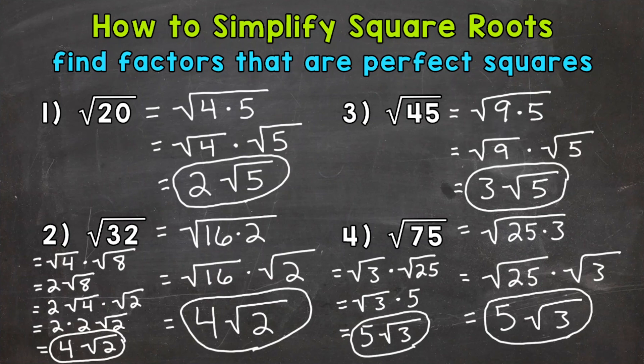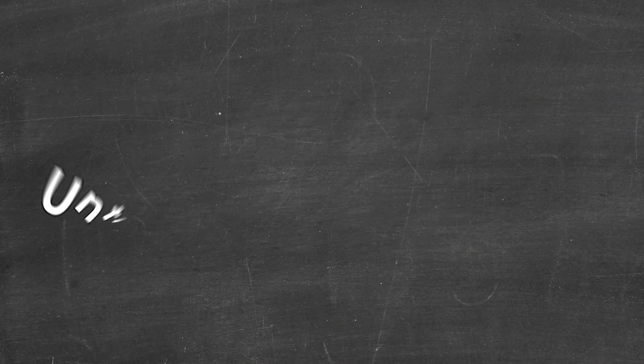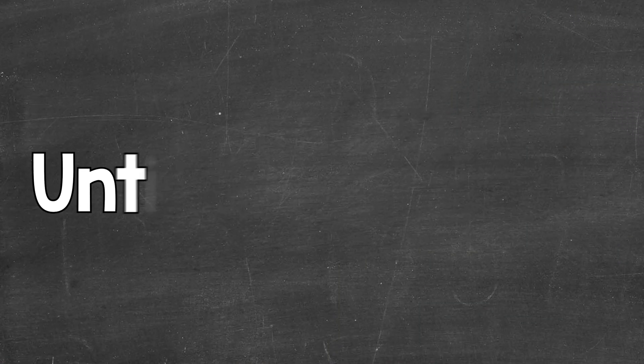So there you have it — that's how you simplify square roots. I would suggest really knowing the first 12 perfect squares, as this will help a lot with square roots and simplifying them. I have a pinned comment below with the first 12, so if you need some help with those, check that out. I also have some other square root videos down in the description. I hope that helped. Thanks so much for watching. Until next time — peace.